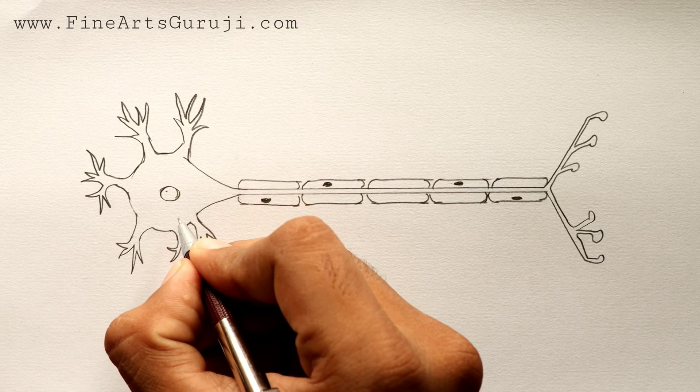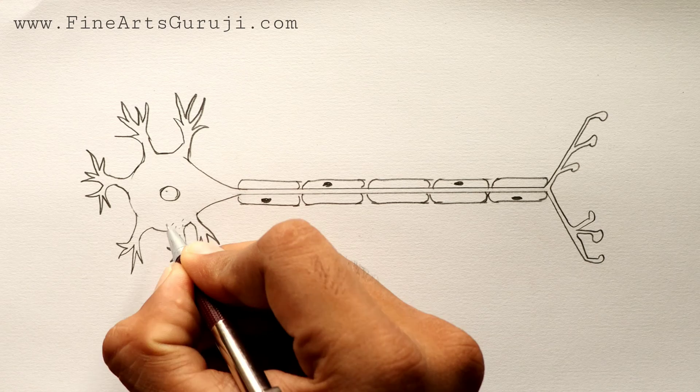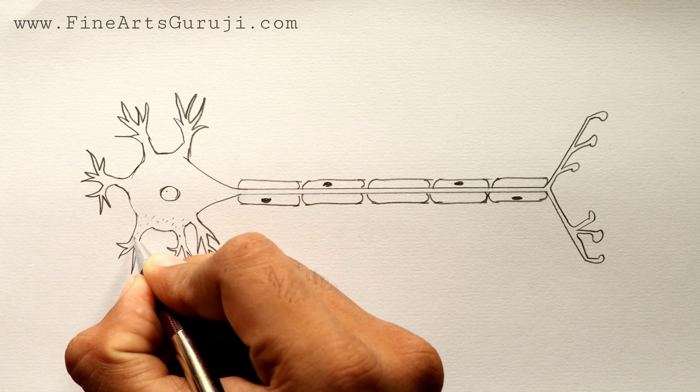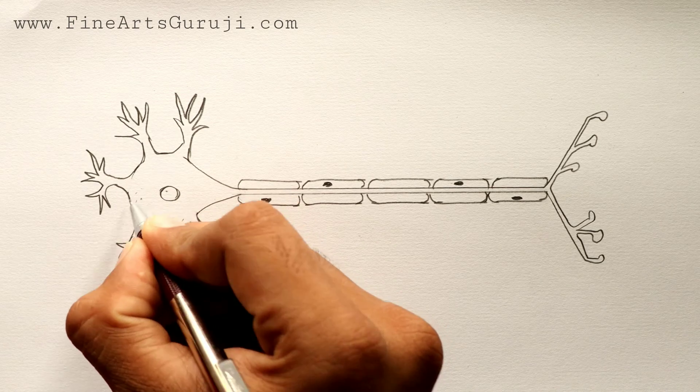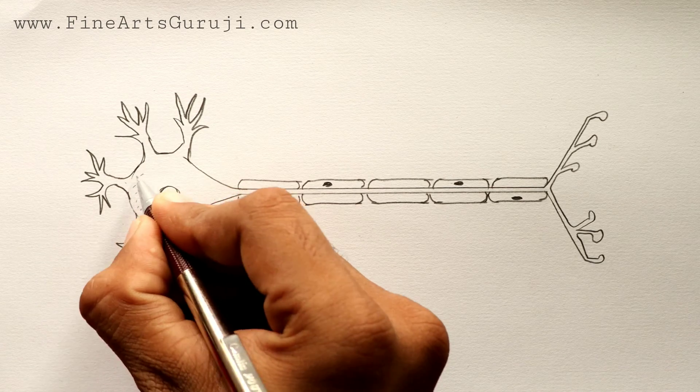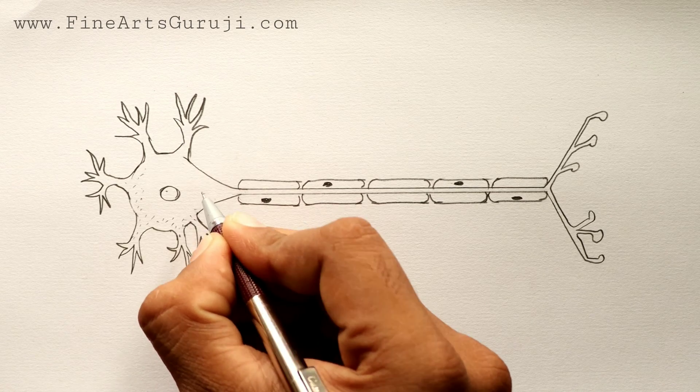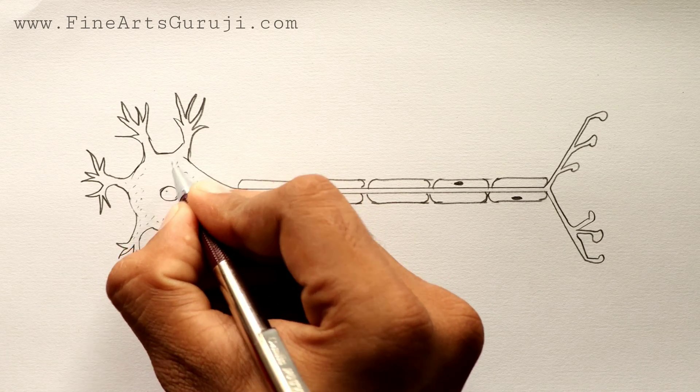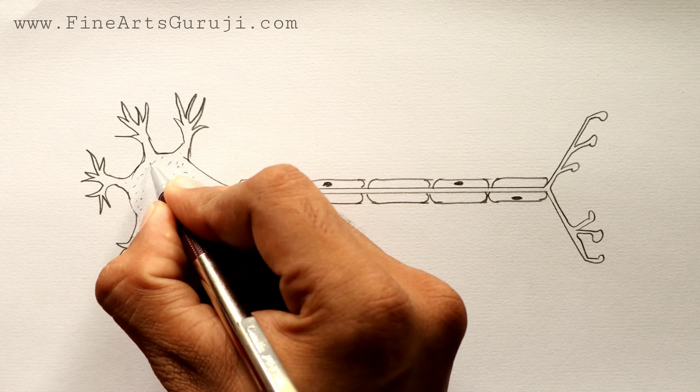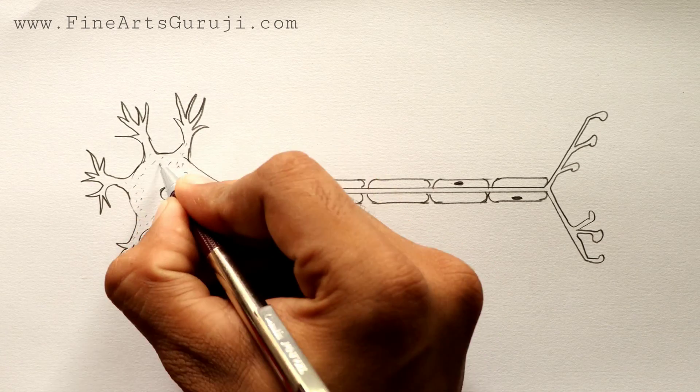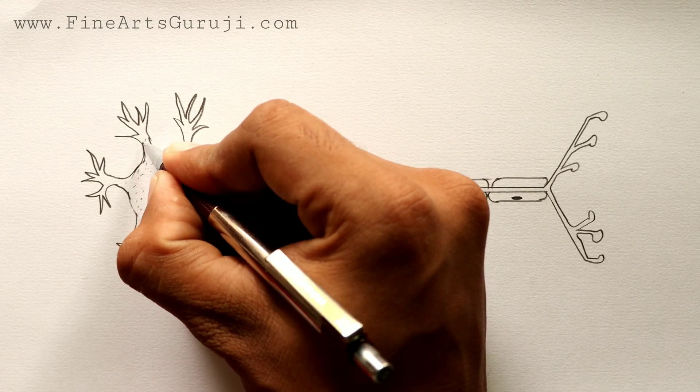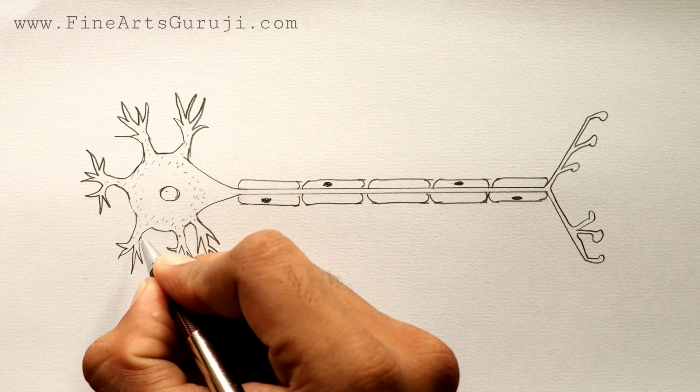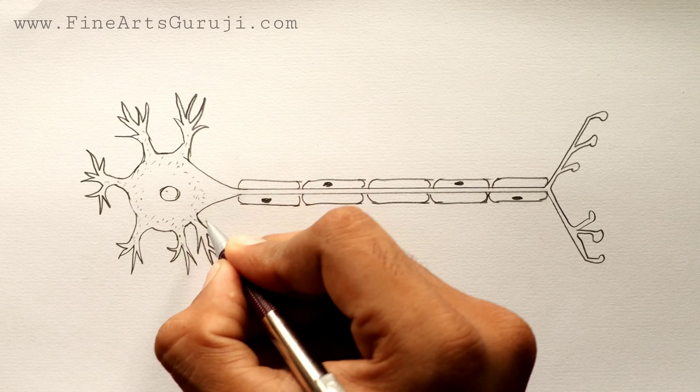After completing this Schwann cell, we have to draw Nissl's granules. Simply we will draw here dot points surrounding this nucleus. I hope you have an amazing experience with me by drawing this diagram. Then please don't forget to click the red button and subscribe to our YouTube channel and also click the bell icon. I hope you have observed that my English is not too good, but I tried to make it easier for you so you can understand it in English.